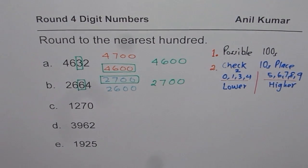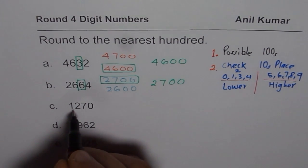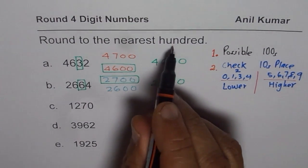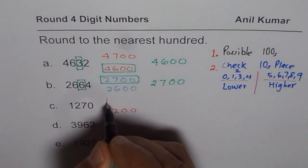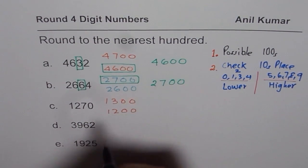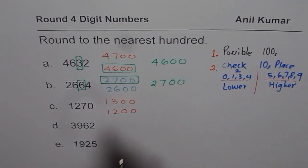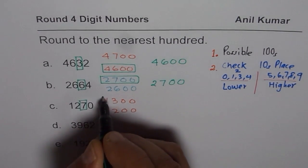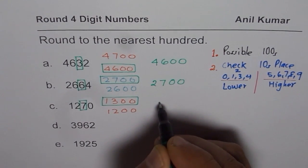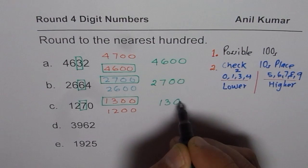That is a quick way of rounding 4-digit numbers to the nearest 100. Now the next number for us is 1,270. 1,270 nearest 100 is between 1,200 or 1,300. Let us check the number in tens place. It is 7, which is higher, so we will round it to the higher option, which is 1,300.